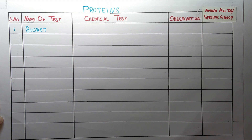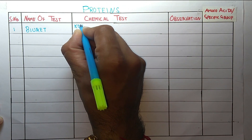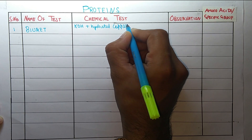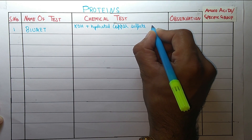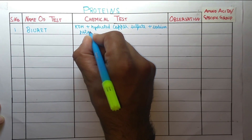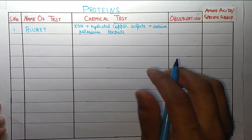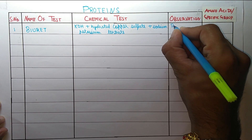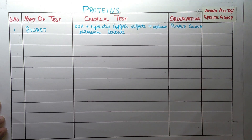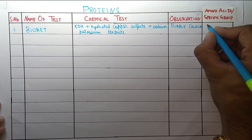In the Biuret test, the reagents are KOH plus hydrated copper plus sodium potassium tartrate. The color observed is purple. This purple color confirms the presence of the peptide bond.